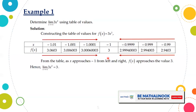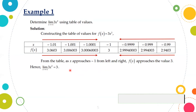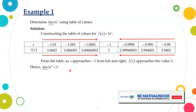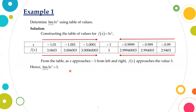Notice that from the table, as x approaches negative 1 from the left and right, the value of f(x) approaches the value 3. Therefore, the limit of 3x squared as x approaches negative 1 is equal to 3.